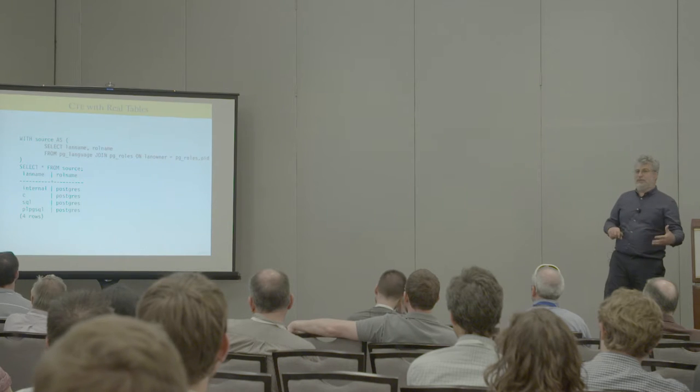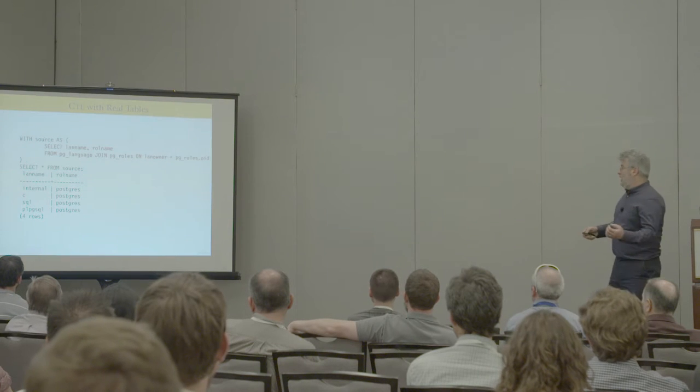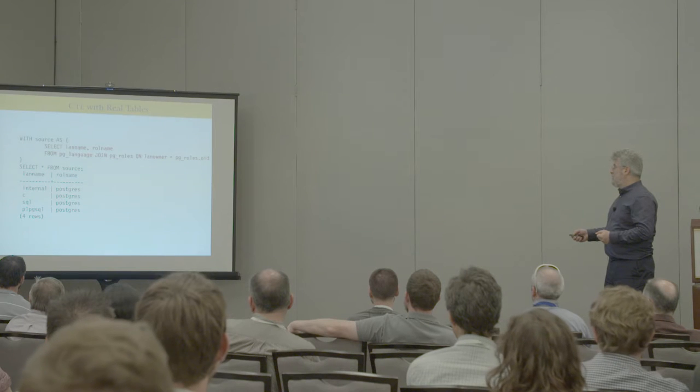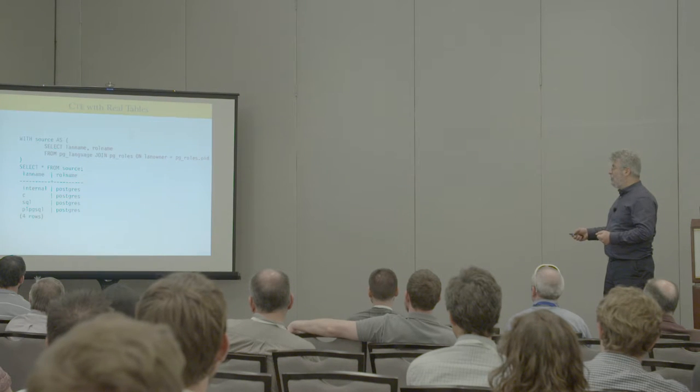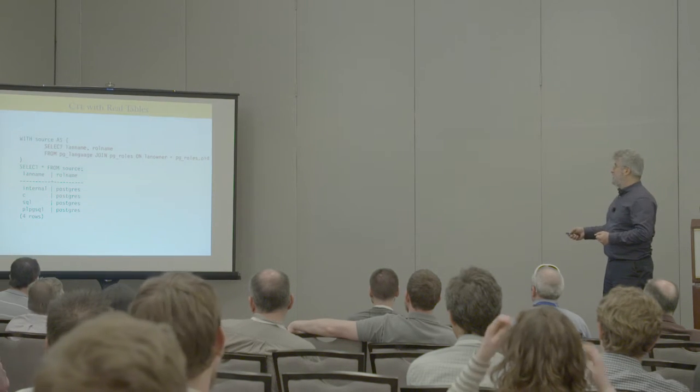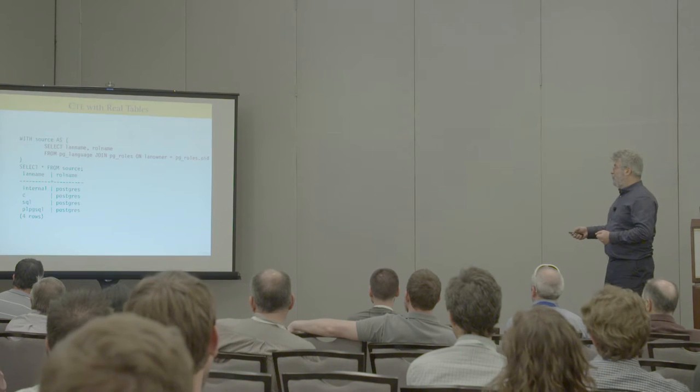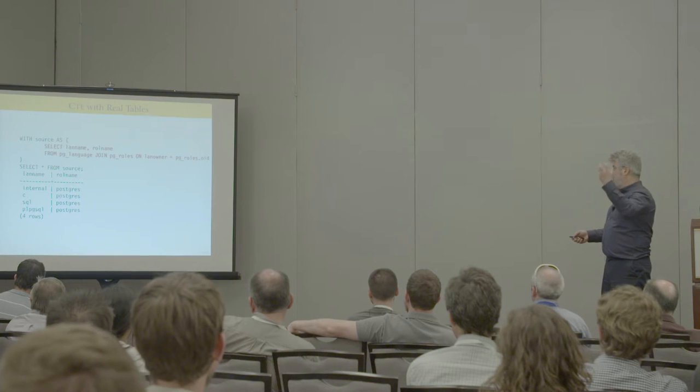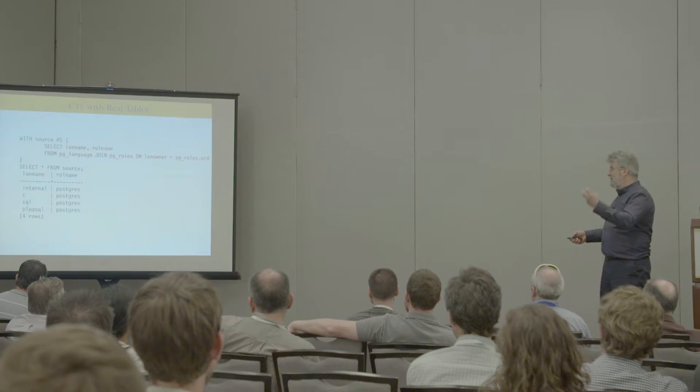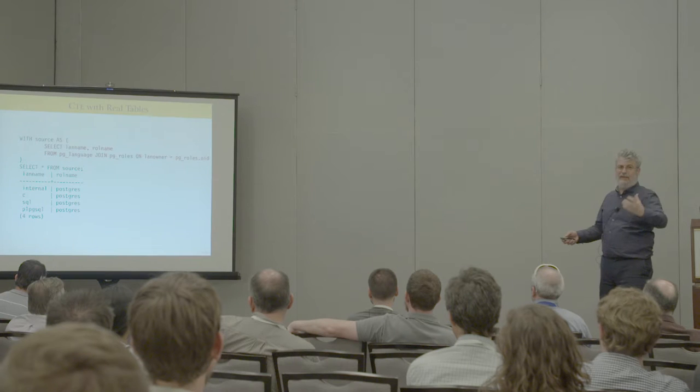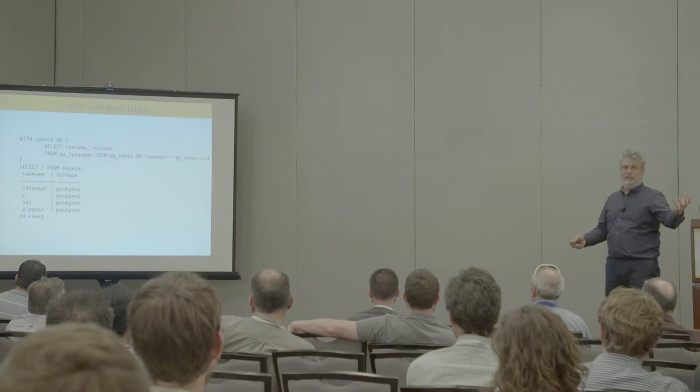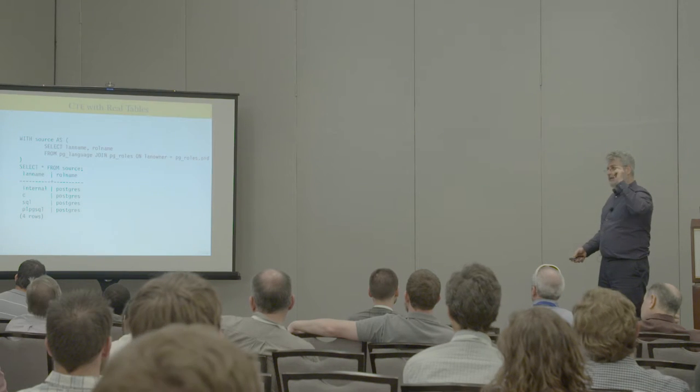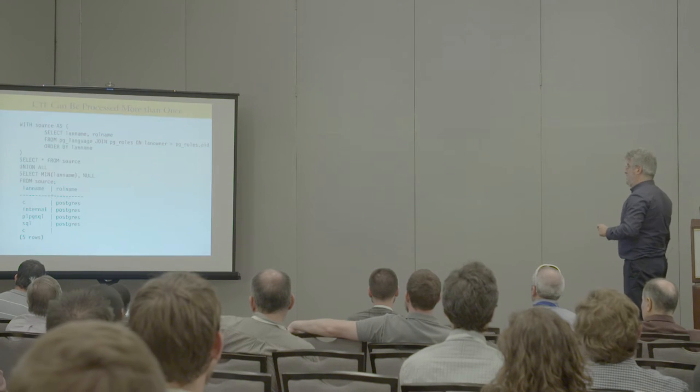So let's do some common table expressions with some real tables. Here's an example. I'm using a system table, pg_language, and I'm joining it to pg_roles. So this is an entire select statement inside the red. And I've created a data source, which is the join of those two. And effectively when I do the query down here, I get the same results as if I had run that. Now, is this useful? No. Right. This is completely fabricated. But again, it illustrates that we can put queries that even do joins inside of these common table expressions.